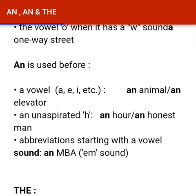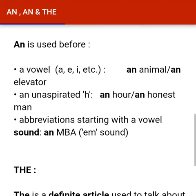Kuch abbreviations bhi hain jinka vowel sound se shuru hota hai — jaise A-M. You should know that to be A-M — the letter A starts with a vowel sound, so we use AN before it.